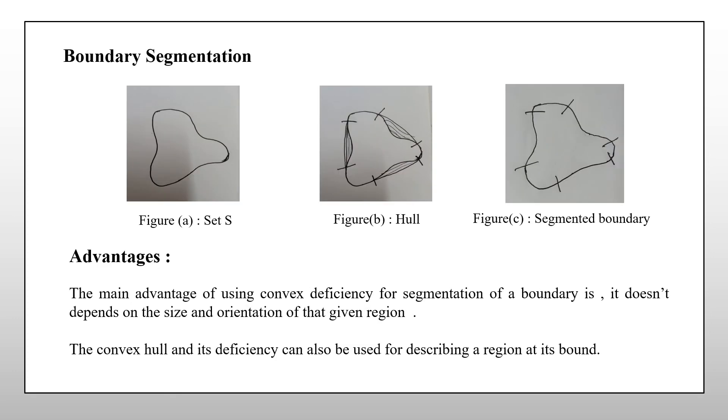Let us see the boundary segmentation. First of all let us consider the boundary of an original object with set S. This is the boundary of an original object. Here we need to make it a hull so in order to make it a hull we need to connect all these lobes by connecting all these lobes. This outer region represents the hull and inner region is the original boundary sectors.